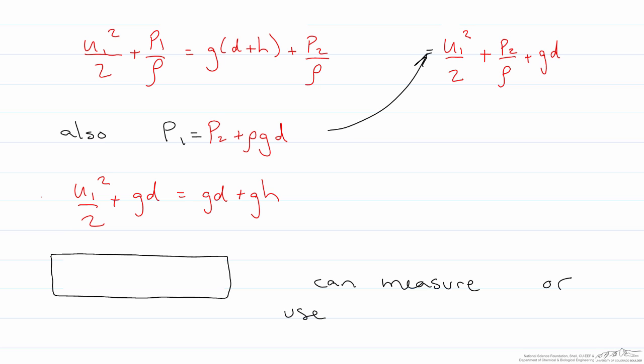I have a p2 over rho on each side, those cancel out, as do the gd's. I can solve for u1 by taking the square root of both sides, u1 is equal to the square root of 2gh.